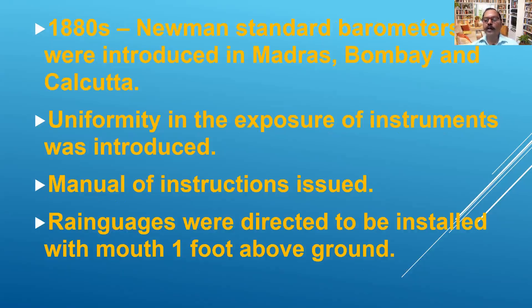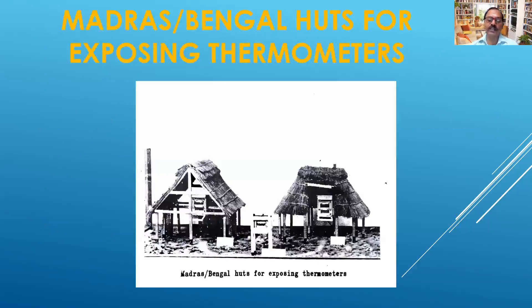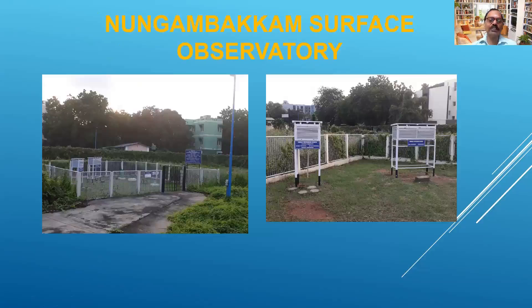Around 1880 they realized the importance of having standard instruments and the need to calibrate them periodically — every two, three, or at least six months. So in 1880, Newman standard barometers were introduced in Madras, Bombay, and Calcutta. Uniformity in exposure of instruments was introduced, manuals of instructions were issued, and it was directed that rain gauges should be installed with the mouth one foot above the ground. Before the Stevenson screen, arrangements called the Madras hut and the Bengal hut were used, where thermometers were hung shielded from direct sun.